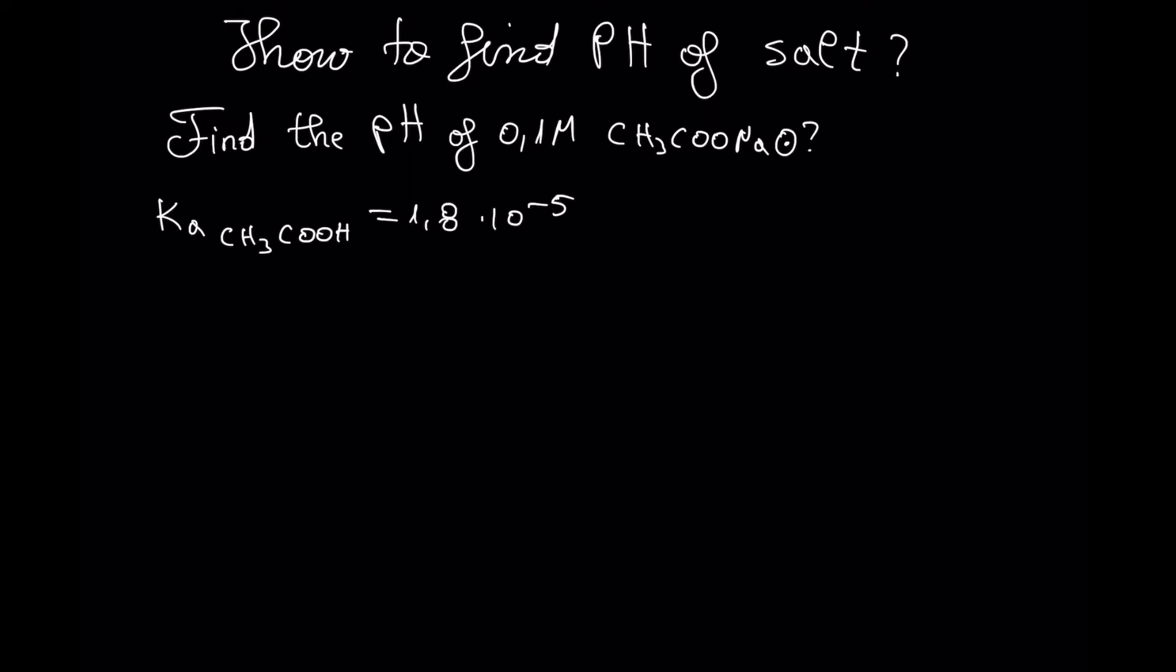In this video we are going to learn how to find the pH of a salt, in this case sodium acetate 0.1 molar. In order to solve this kind of problem, the first step is dissociation of the salt.